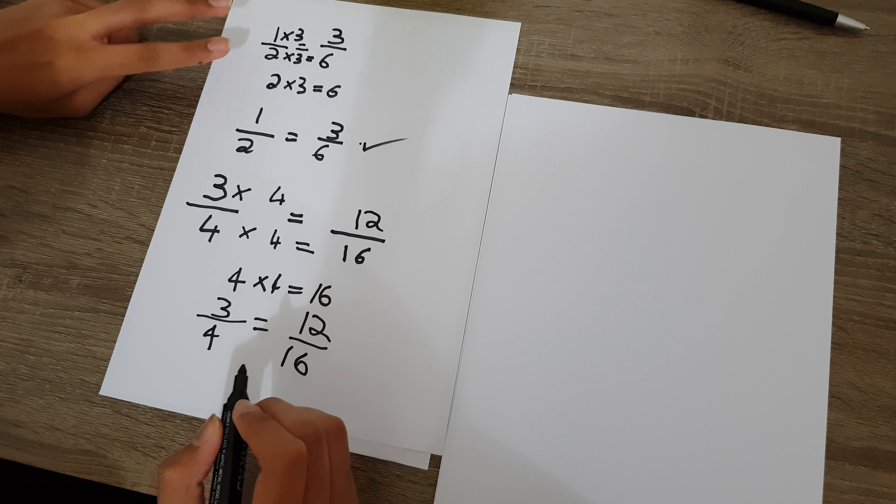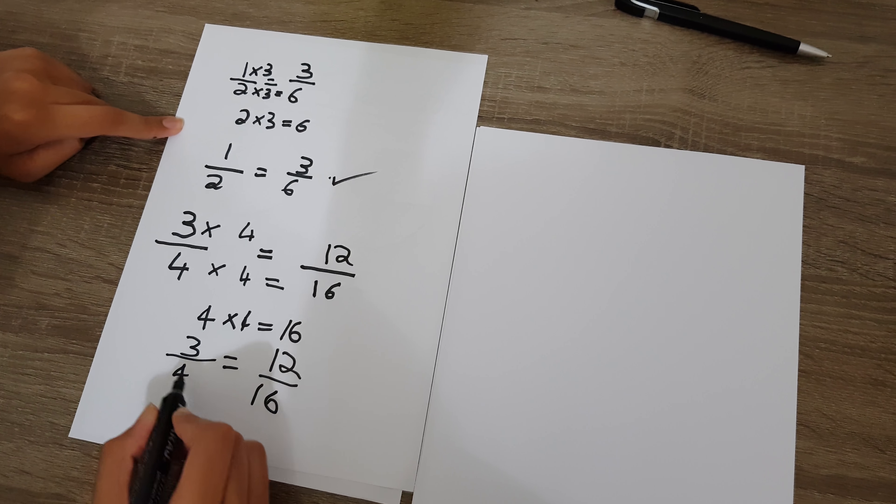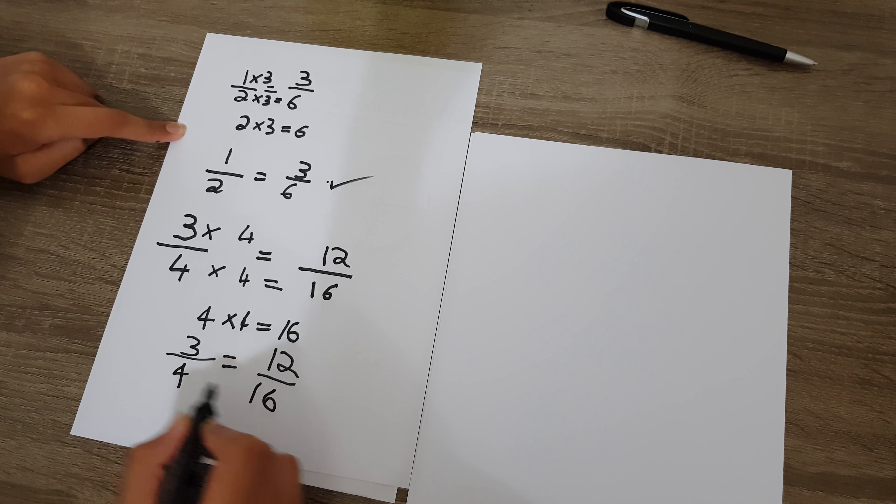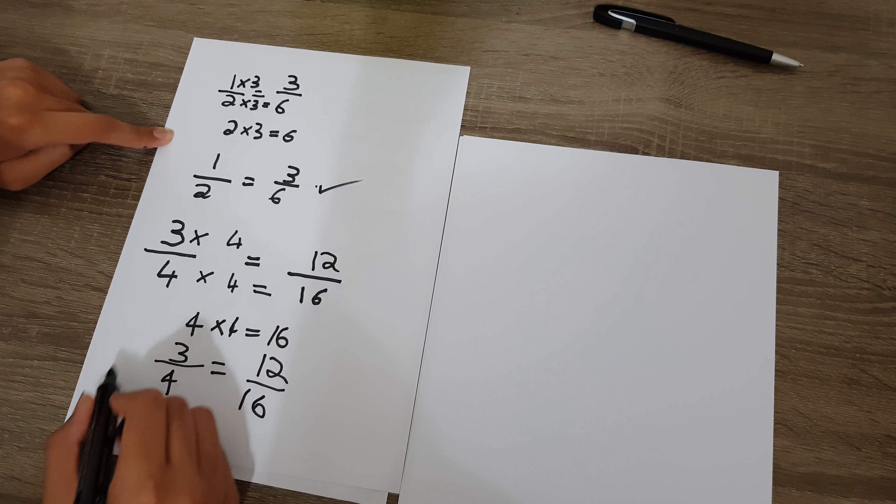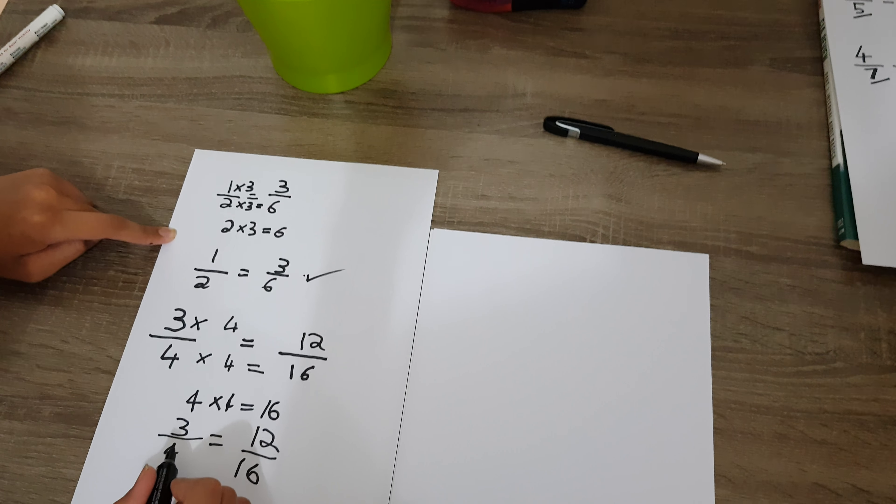So always when these kinds of problems come, always first check what is the relationship. What is the multiplication factor? And when you find what you have to multiply by, you have to multiply the whole fraction, the numerator and the denominator, by that number.